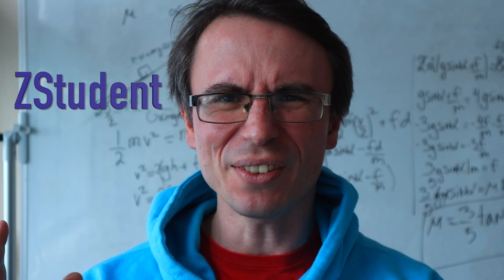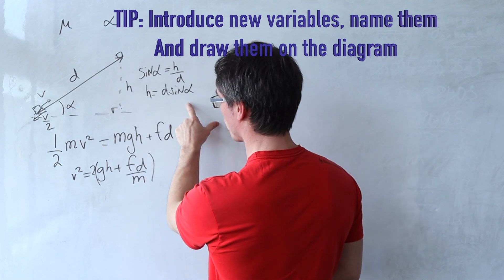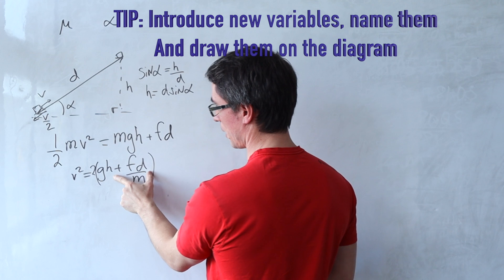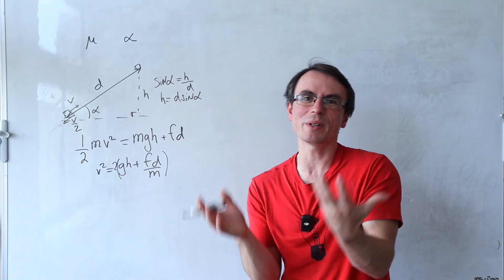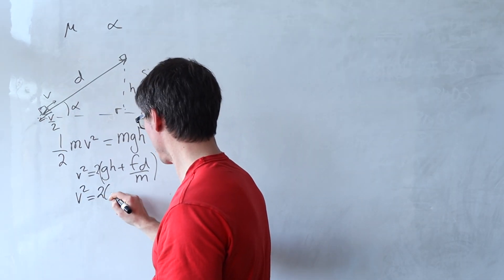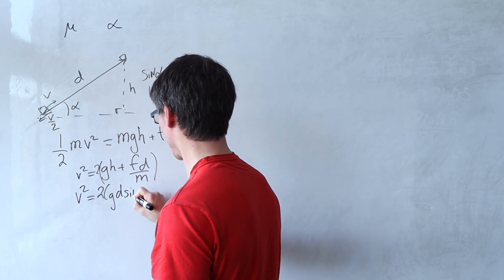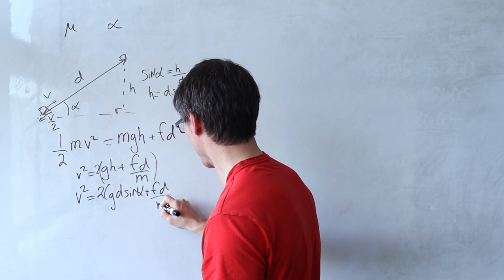You may ask why am I doing this? But z physics, why are you doing this? Well, if we were to do this then we can express h in terms of d and then we have the same variable across here. We can also do it the other way around probably producing the same result. V squared will be equal to 2g rather than h. I'm going to write d sine alpha plus fd over m.